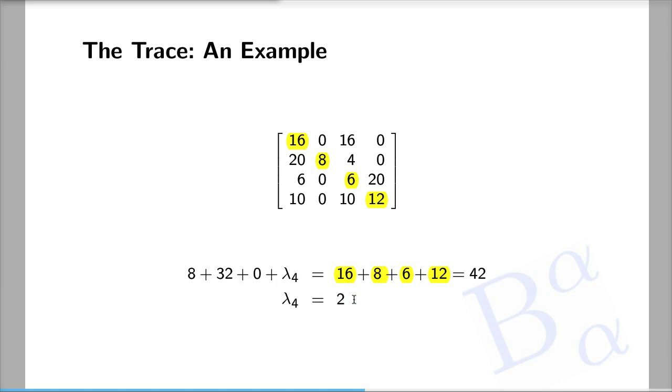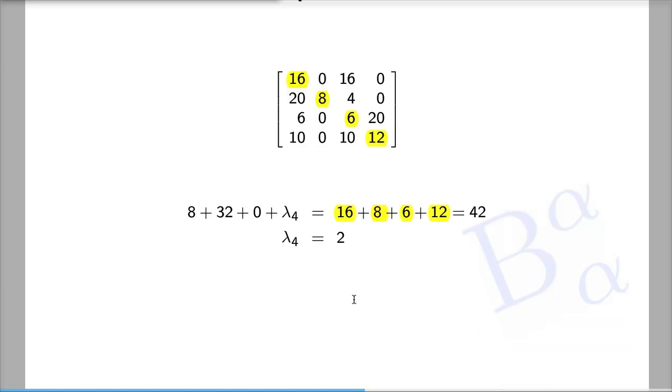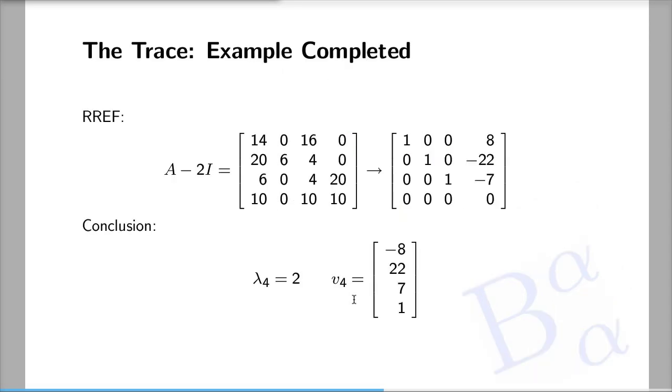This is how the trace helps us determine the remaining eigenvalue when all but one has already been determined. Now, how do you find the corresponding eigenvector? Well, in this case, the eigenvector is determined by the routine procedure, which involves subtracting 2 from the diagonal and then calculating the row-reduced echelon form. Here you see the row-reduced echelon form of the resulting matrix, which tells us that the eigenvector corresponding to eigenvalue 2 is (-8, 22, 7, 1).